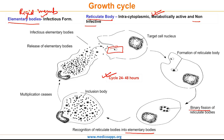Just as a recap: Chlamydia has two developmental stages in its life cycle — the infectious stage known as the elementary bodies, and the metabolically active and replicating stage known as the reticulate body. Once the elementary body infects the host cells, it is transformed into the reticulate body and then undergoes multiplication by binary fission, and is finally released by reverse endocytosis. This entire cycle takes about 24 to 48 hours.